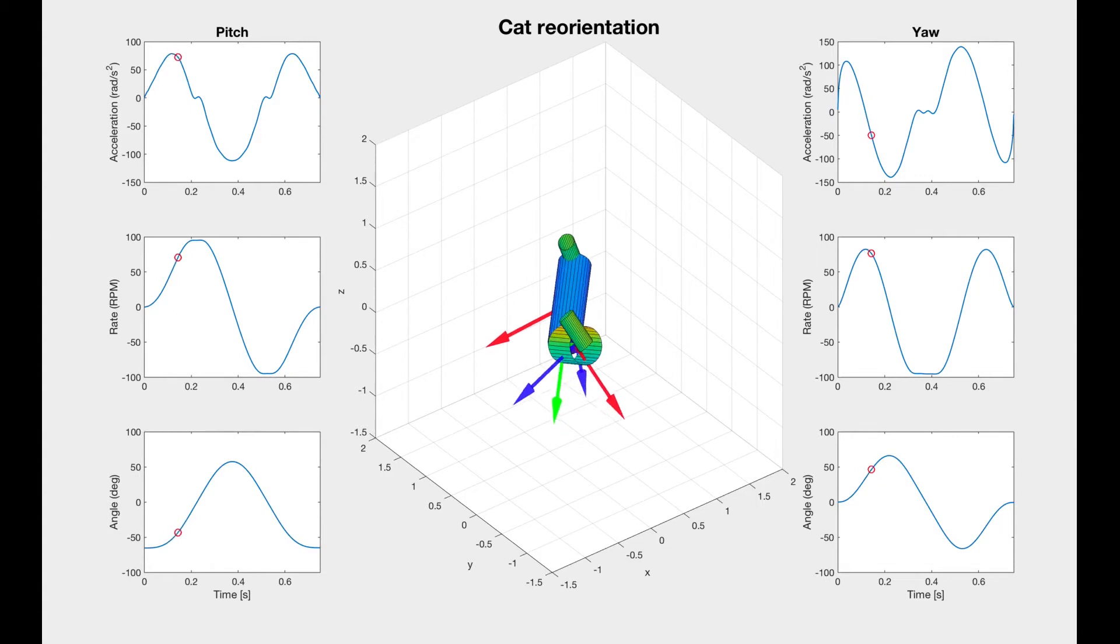Currently, we're using trajectory optimization in order to plan for the motion of the cat. We are able to successfully get our cat to flip 180 degrees and land on its feet.